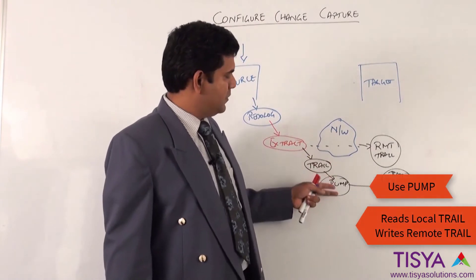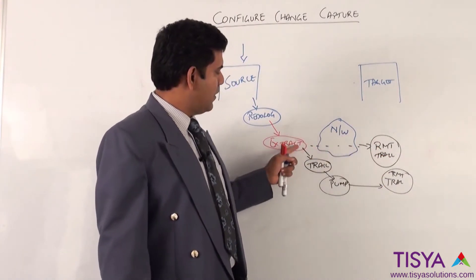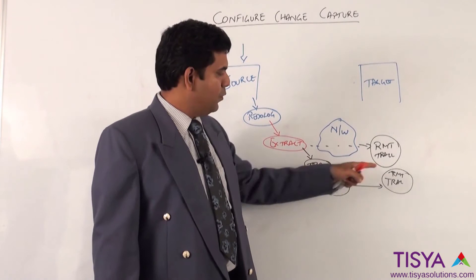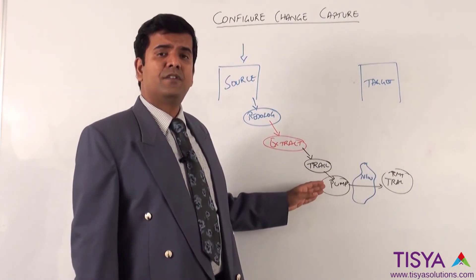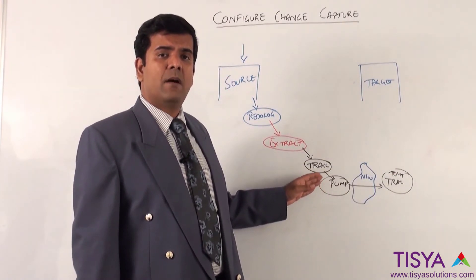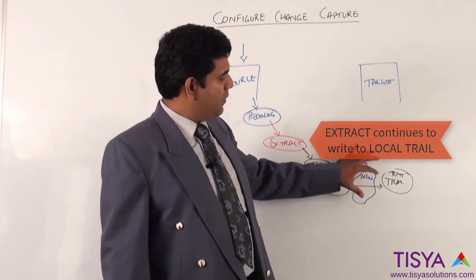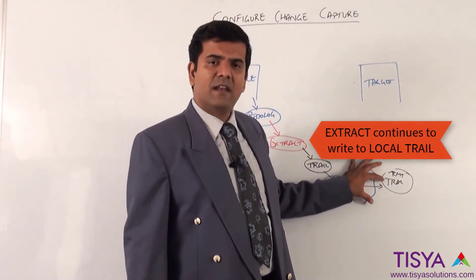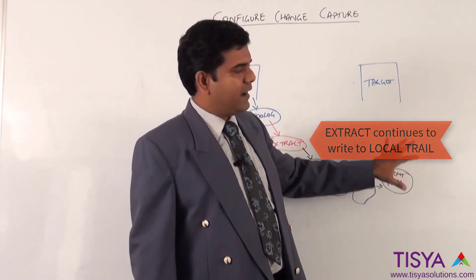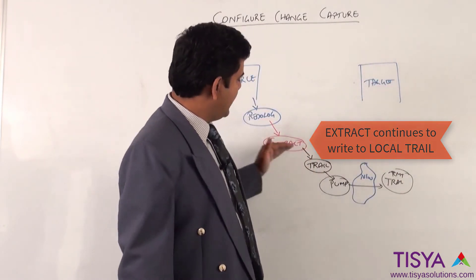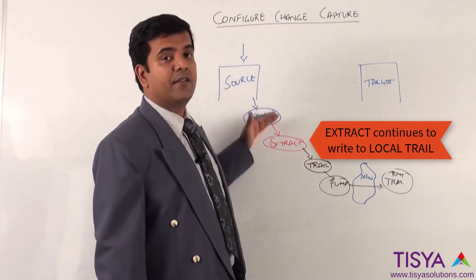So we have both options: an extract can directly write to a remote trail, or write to a local trail and start a separate pump to send it across. One of the major benefits of having a pump and extract is that whether the pump is running or not, whether the network is available or not, or whether the remote host is accessible, the extract will continue as long as transactions are happening on the redo log.